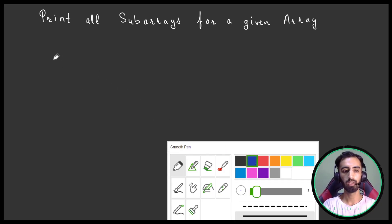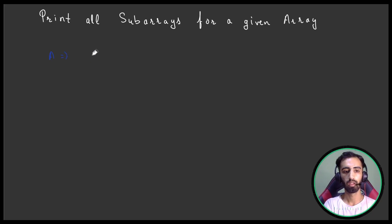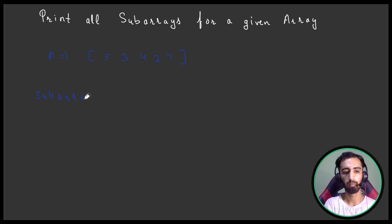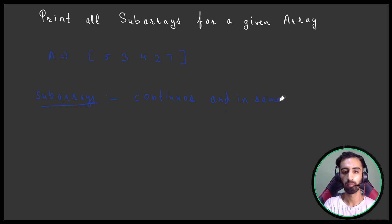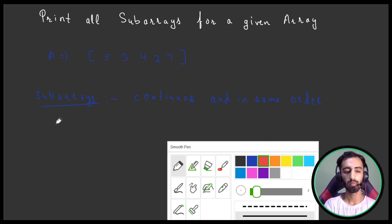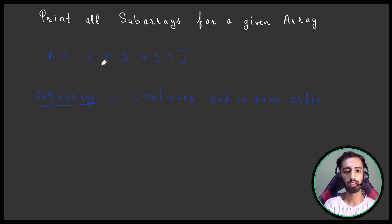Let's take an array A which has some values — say 5, 3, 4, 2, 7. A subarray is a part of this array only, which should be continuous and in the same order. For example, 5 by itself is a subarray, and this complete array is also a subarray.